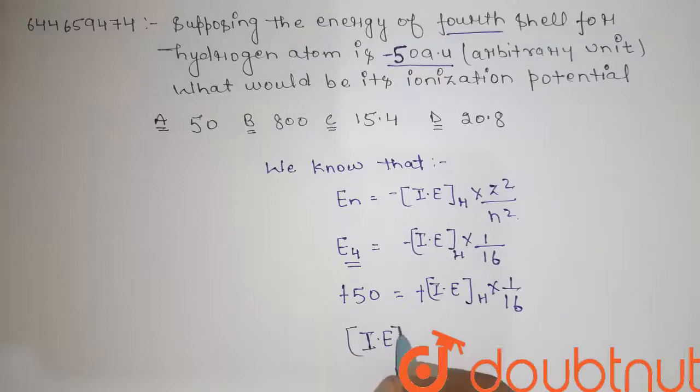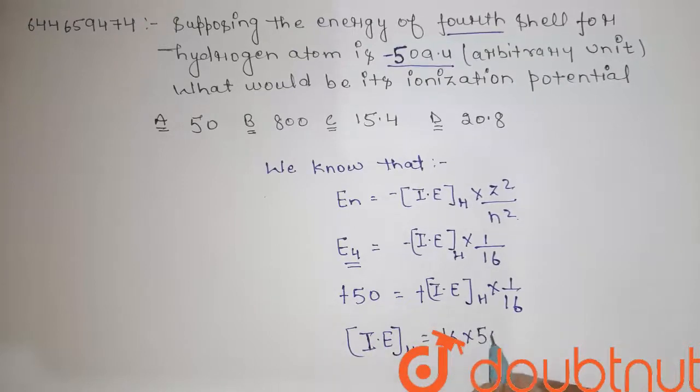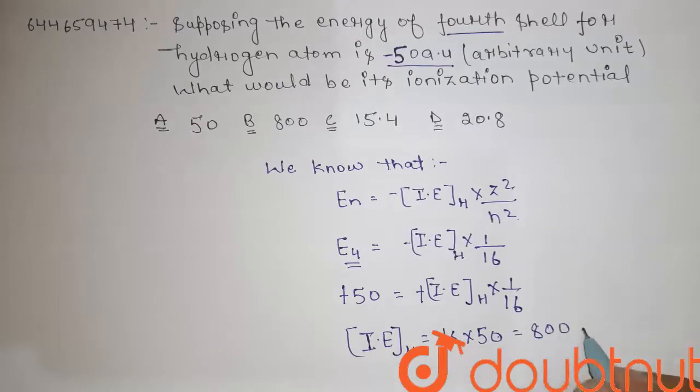Ionization energy for hydrogen atom equals 16 into 50, that comes to be 800 au, which is arbitrary unit.